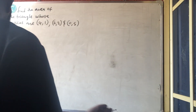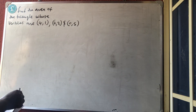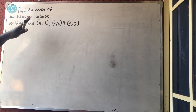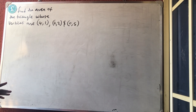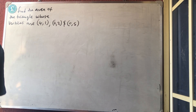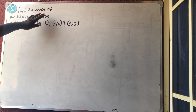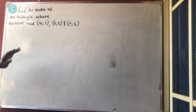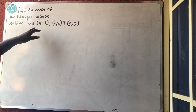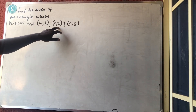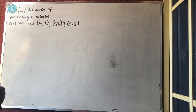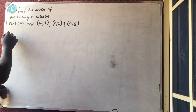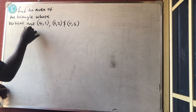Good afternoon and welcome to Master Talker online class. Today we'll be solving a simple question before we go into circle as a content geometry. The question says we should find the area of the triangle whose vertices are 4 comma 1, 2 comma 2, and 0 comma 5.